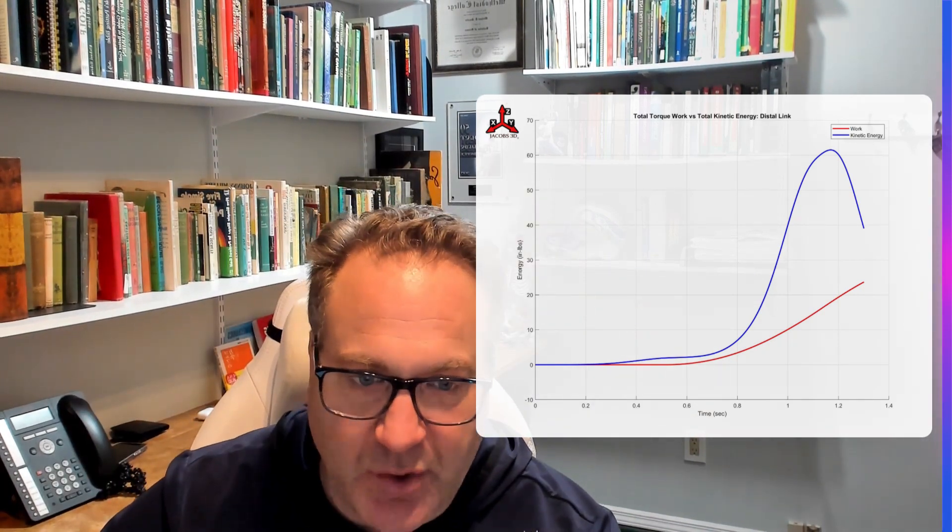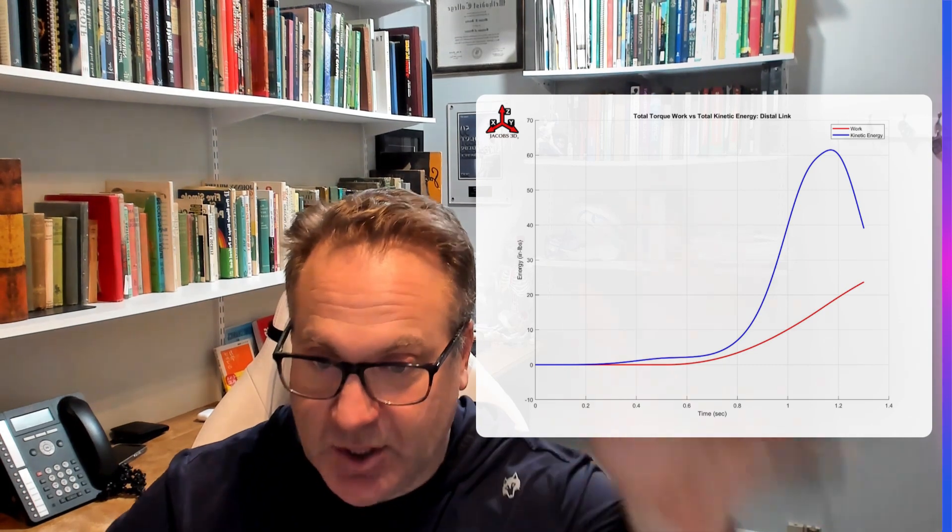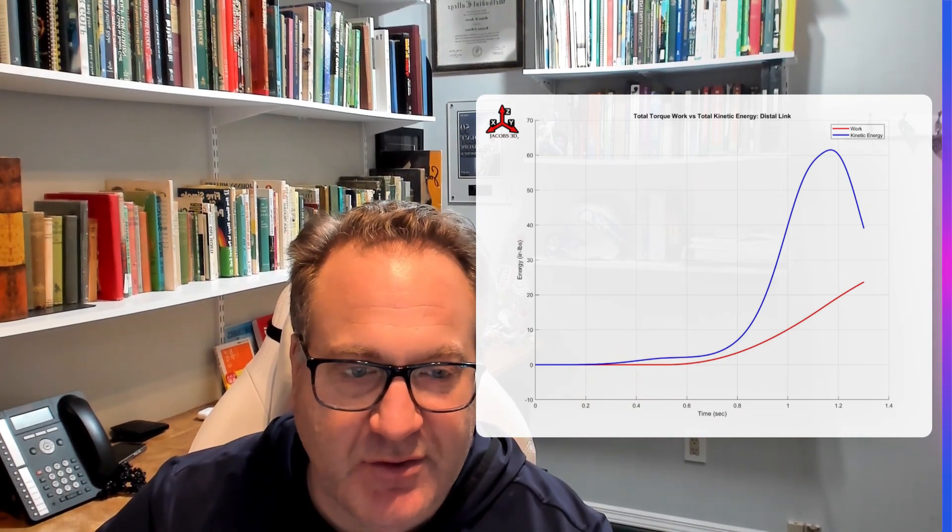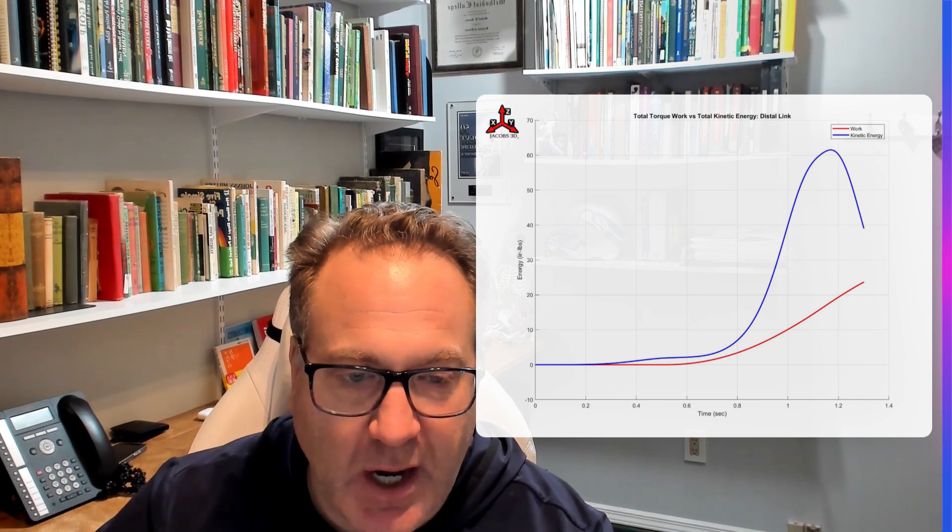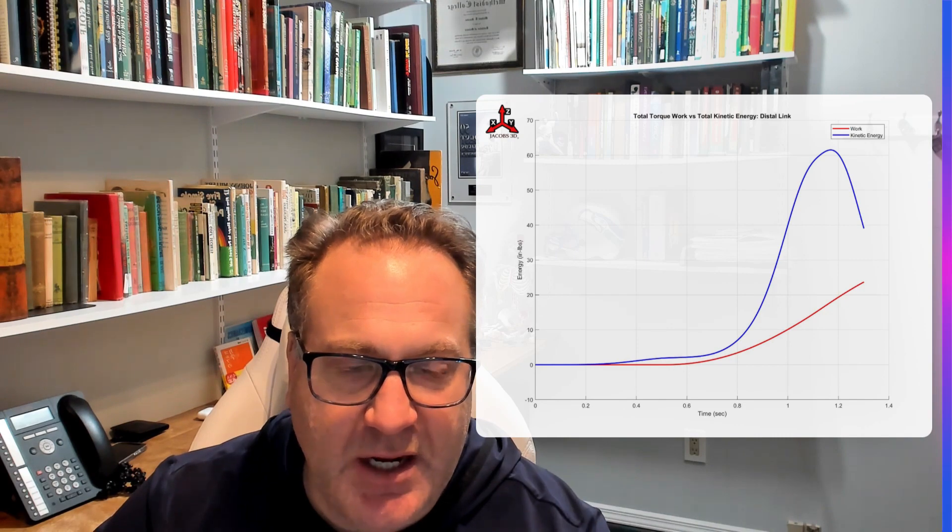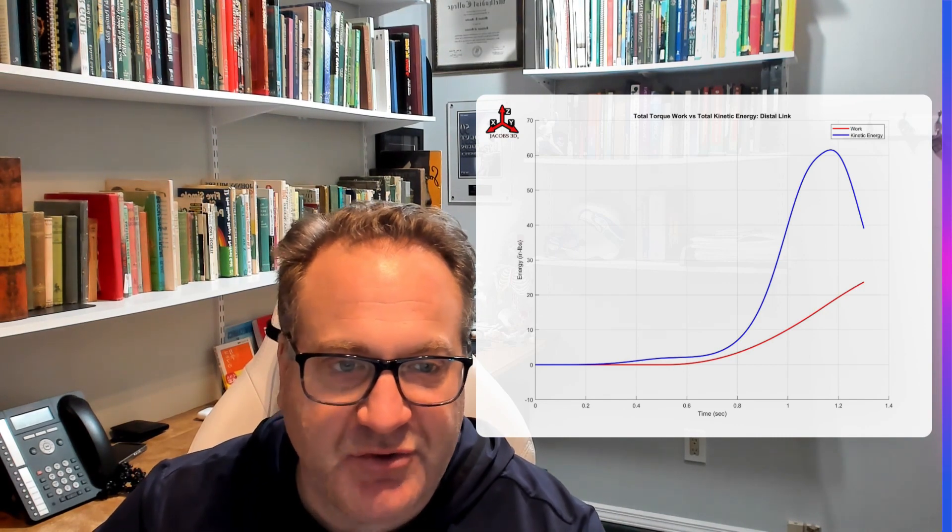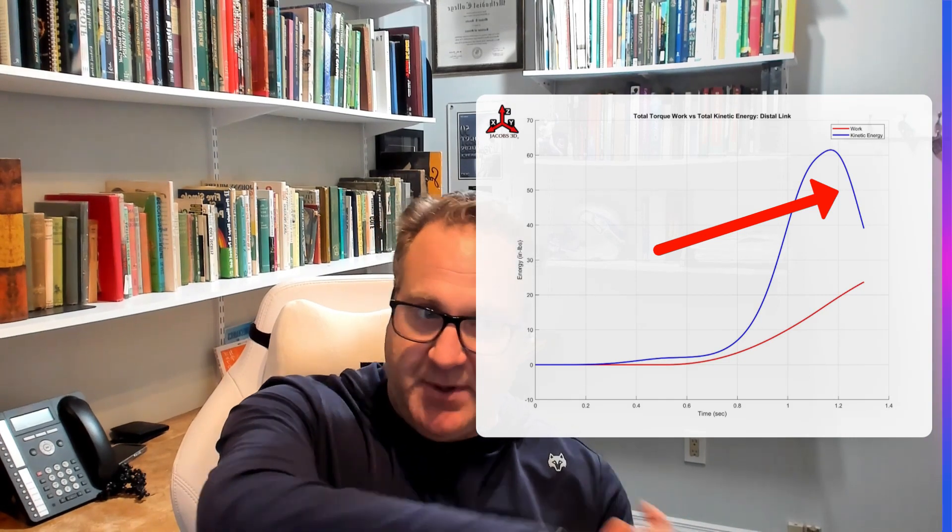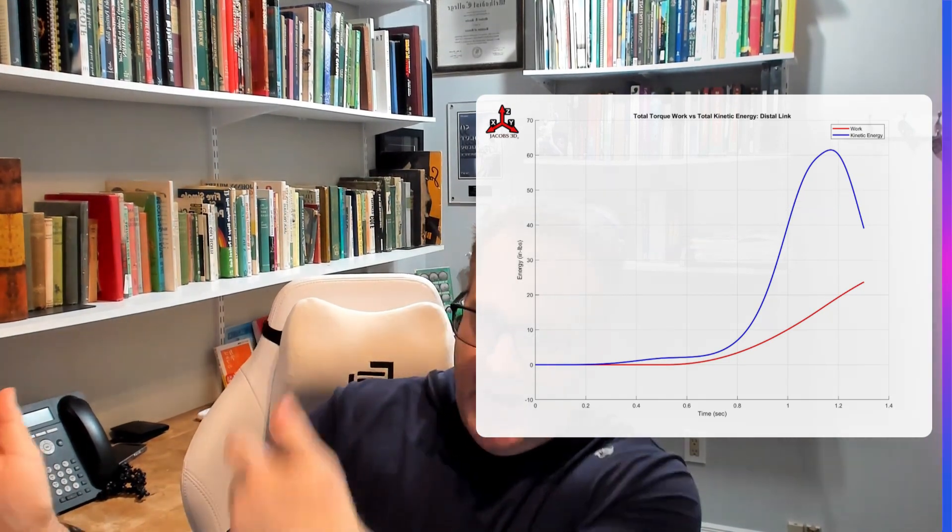And then once the work starts to increase at the club, at the distal link, you'll notice that there is an increase in the work and a sharp increase in the kinetic energy. Now even here, when the kinetic energy starts to transfer back to the proximal link, which happens when you saw that thing whip around at the end,